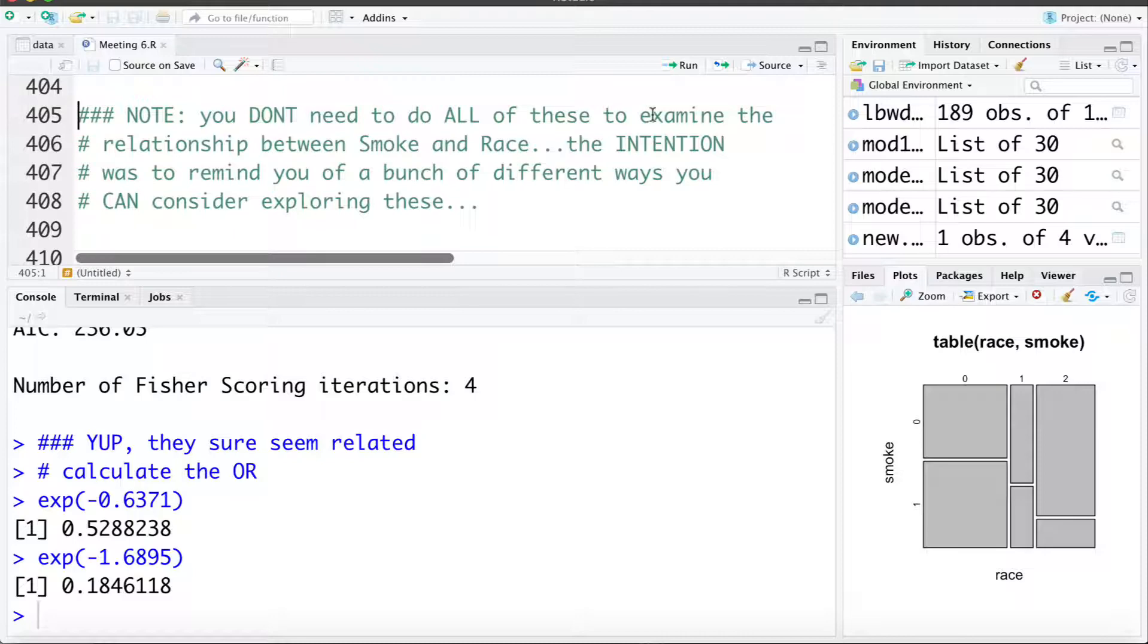Now an important note you don't need to do all of these to examine the relationship between smoking and race. Part of my intention here was just to remind you of a bunch of different ways we can explore that association. This first mosaic plot we looked at that was enough to go with. We could see there clearly was an association and we didn't really need to do all these other tests or plots but they were there just to remind you of different ways to go about checking this.